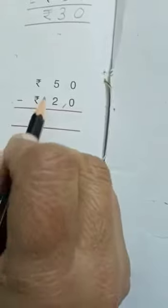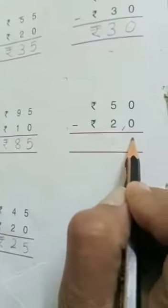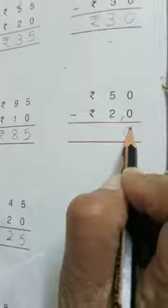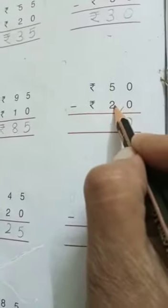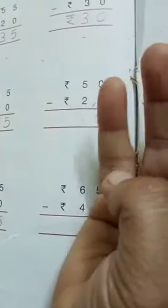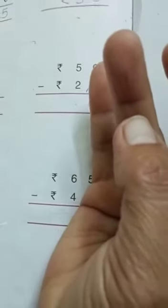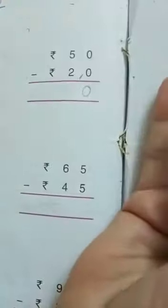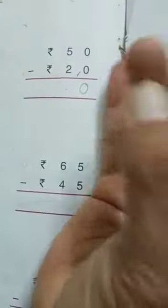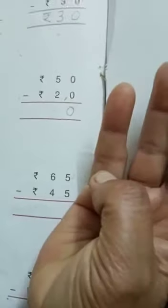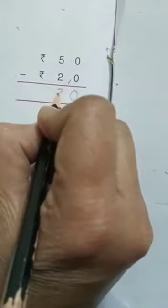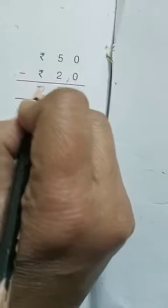Now next: rupees 50 minus rupees 20. 0 minus 0 is 0. Now 5 minus 2: count 1, 2, 3, 4, 5, take away 2: 1, 2. How many numbers are left? 1, 2, 3. Answer is rupees 30.